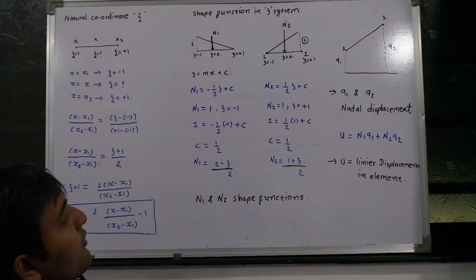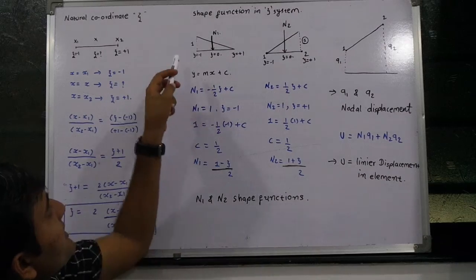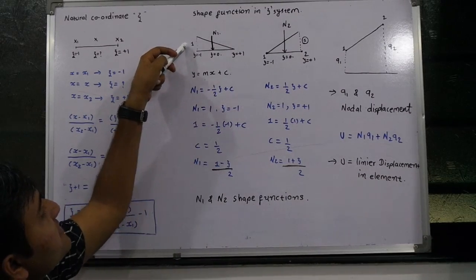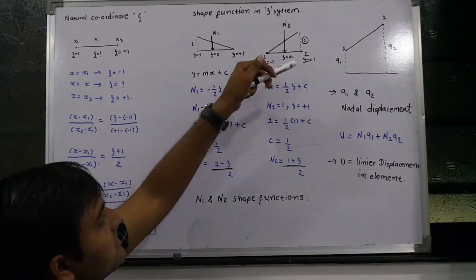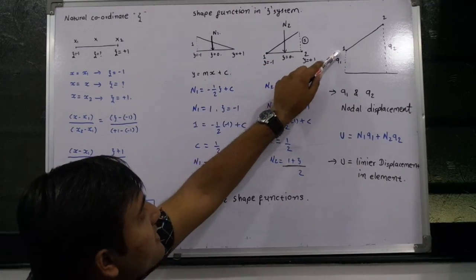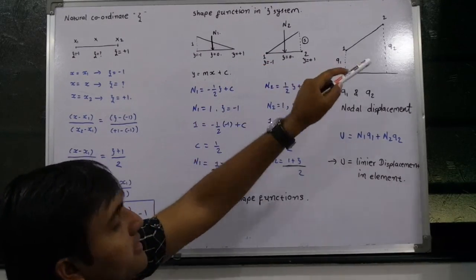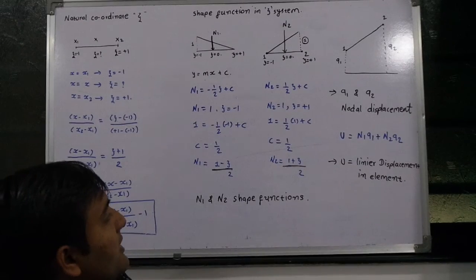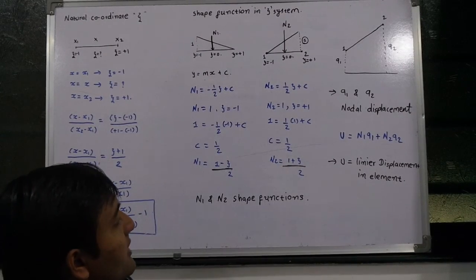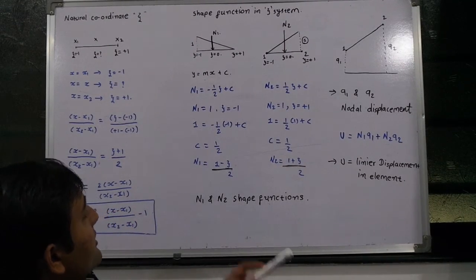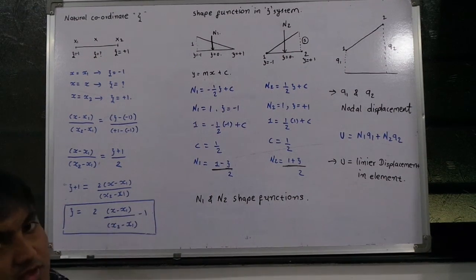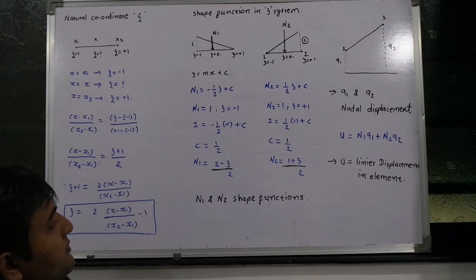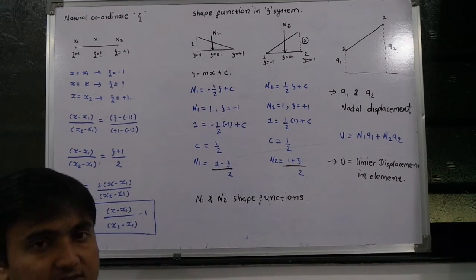If the displacement is more or less than unity, we use the terms q1 and q2. That defines the total displacement as n1*q1 plus n2*q2. And recall that zeta equals 2*(x minus x1)/(x2 minus x1) minus 1.